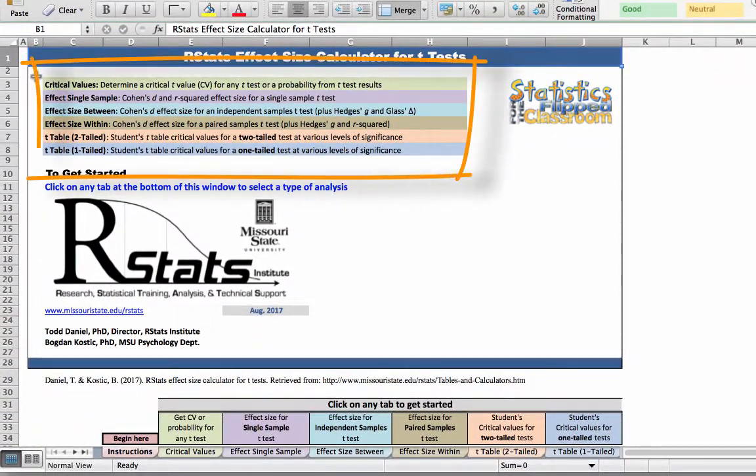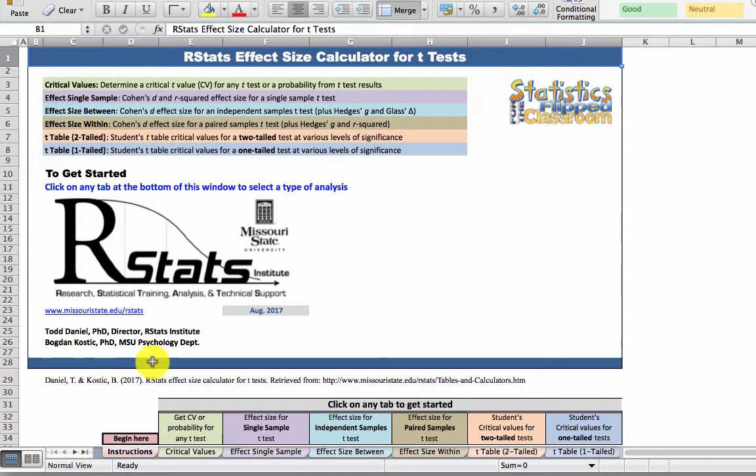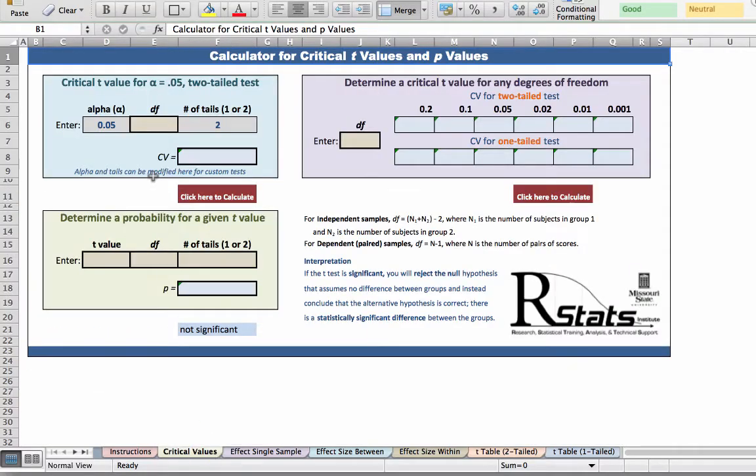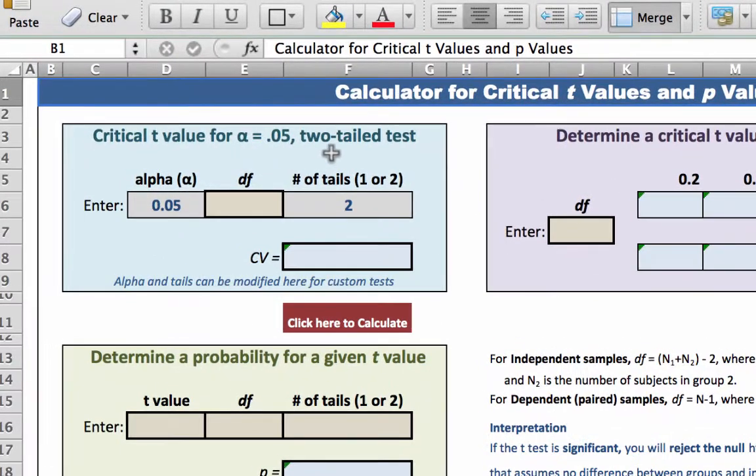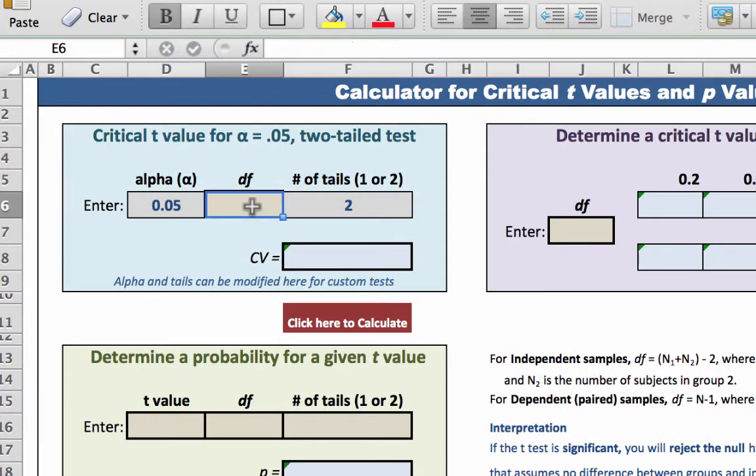Here you can see the six things that you can do with this effect size calculator spreadsheet. Click on the green tab for critical values. In the upper left, we have the typical setup for alpha equals 0.05 two-tailed test. Simply enter your degrees of freedom, 7. Click or hit return, and your critical value is 2.365.